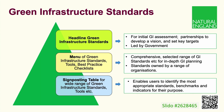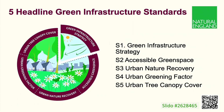Today we're focusing on the five headline green infrastructure standards. These include a green infrastructure strategy standard and then standards for accessible green space, urban nature recovery, urban greening factor, and urban tree canopy cover. Each standard distinguishes between recommended levels of achievement when applied at an area-wide scale and for major developments. They're set out in full on the GI website.